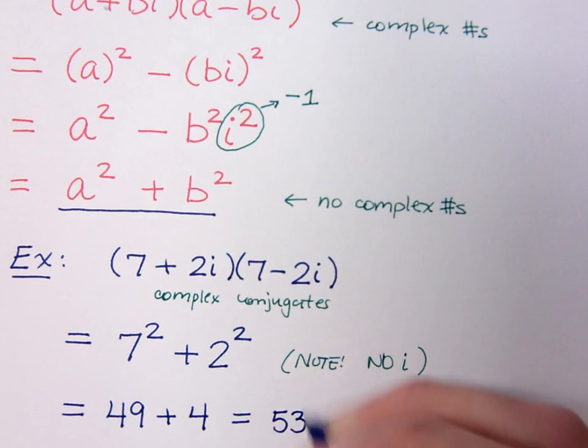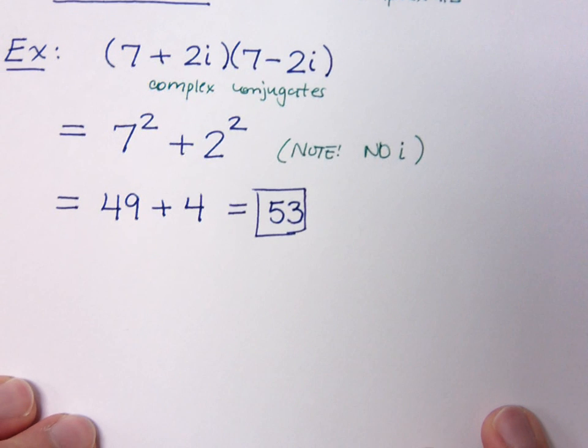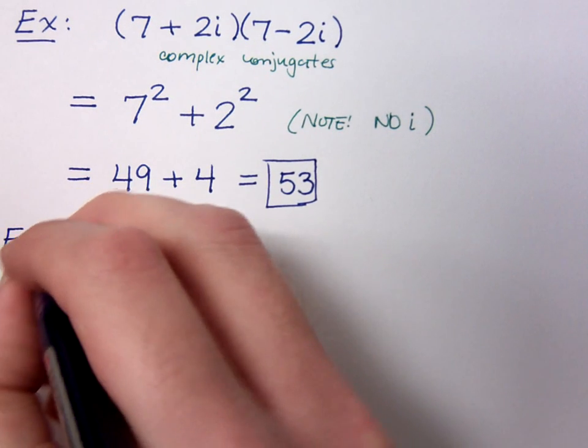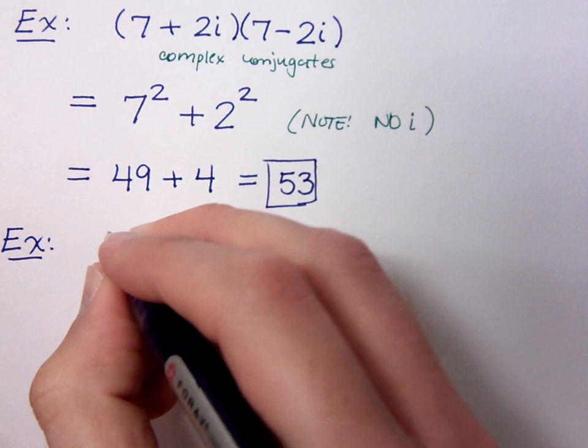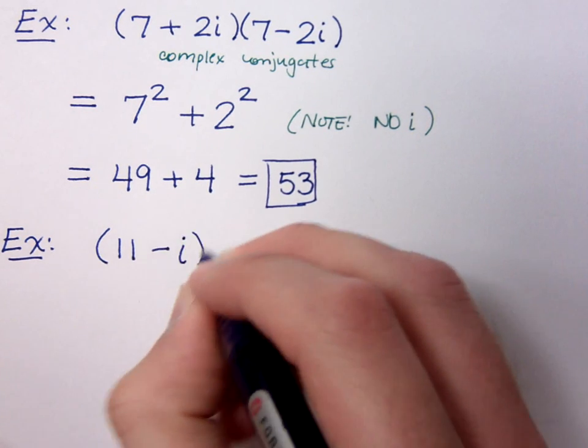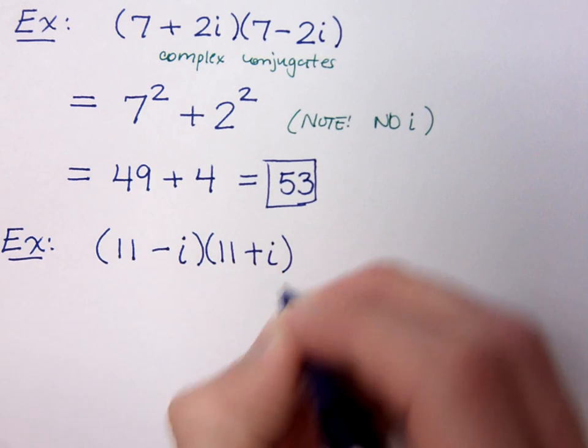Of course, if you have memorized your squares, this stuff shouldn't be bad at all. Okay, let's try another one. Sometimes the easy stuff is what will mess with us the most. Suppose we try this example: 11 minus i times 11 plus i.